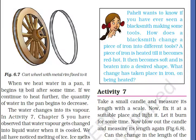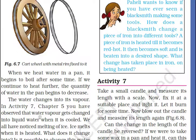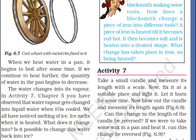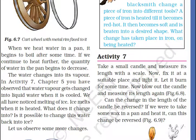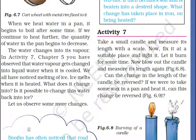When we heat water in a pan, it begins to boil after some time. The water changes into vapor. In Activity 7 of Chapter 5, you observed that water vapor gets changed into liquid water when it is cooled — this is condensation. We have all noticed melting of ice — ice melts when heated, and this water can be changed back into ice by cooling.